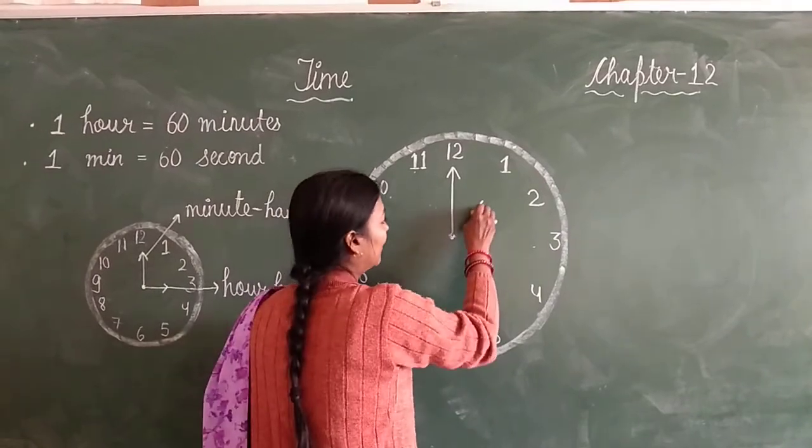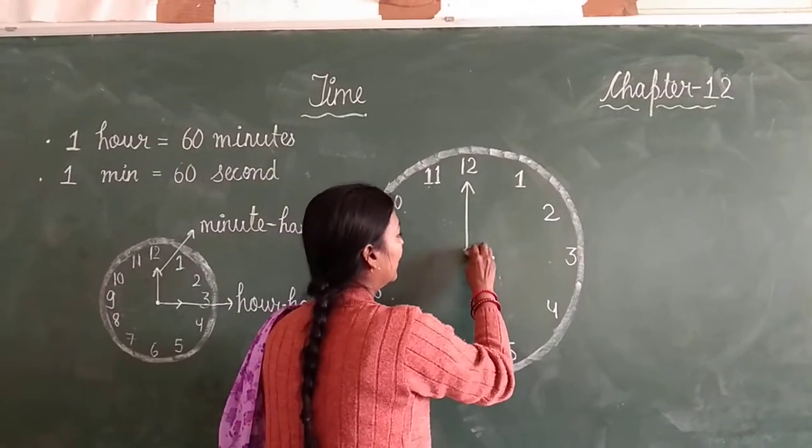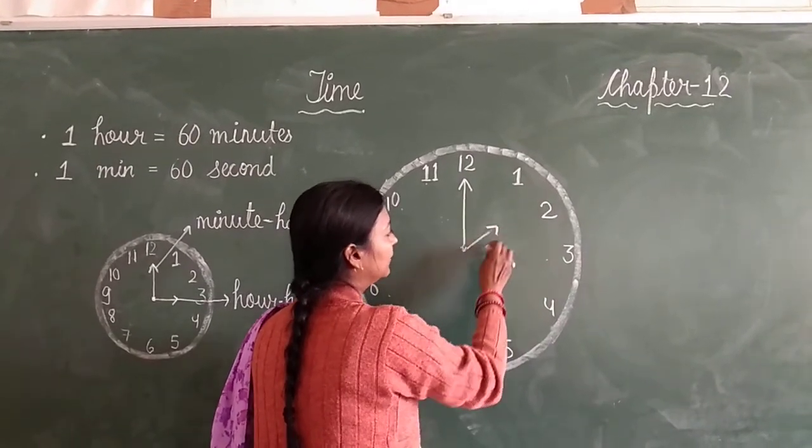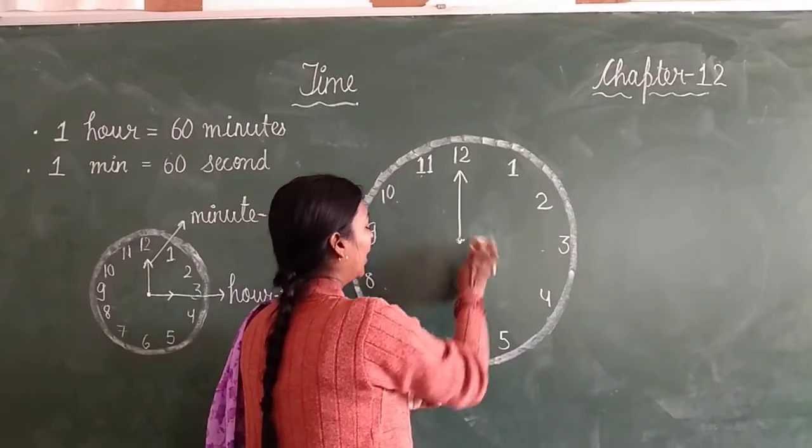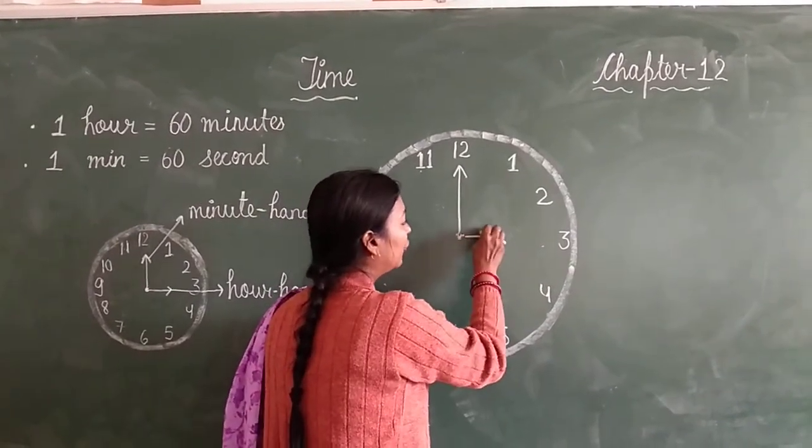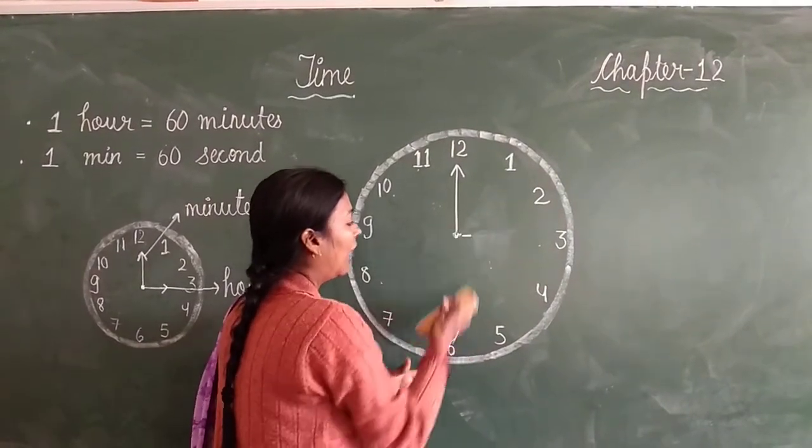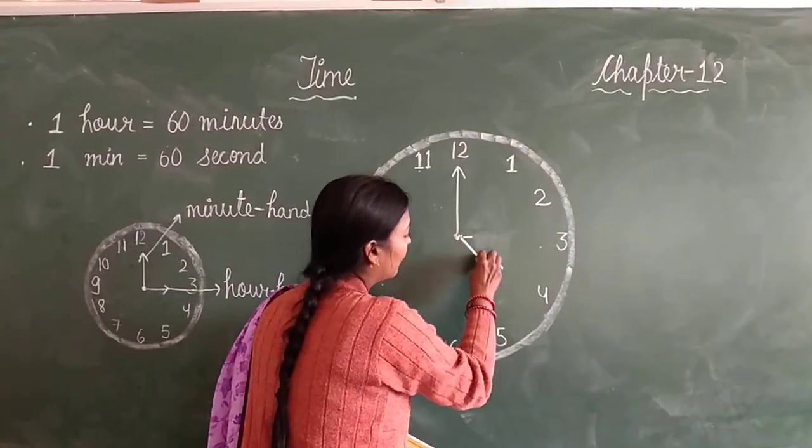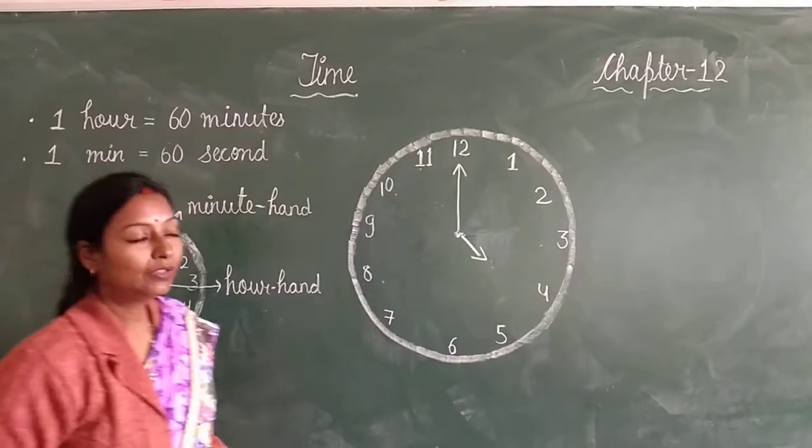For example, 1 o'clock. Suppose short hand is on 2, then 2 o'clock. Hour hand on 3, then 3 o'clock. Hour hand on 4, then 4 o'clock.